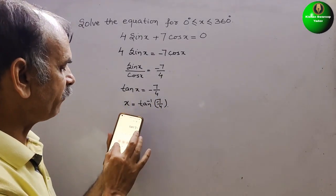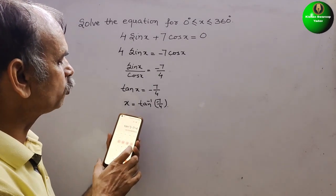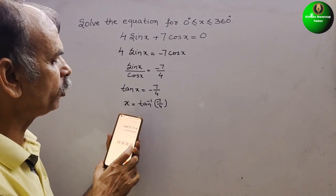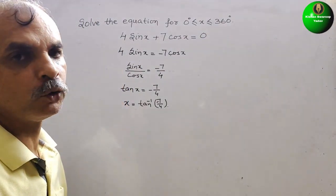Minus is here. 7 divided by 4. That is equal to minus 60.25. So we will write minus 60.25.